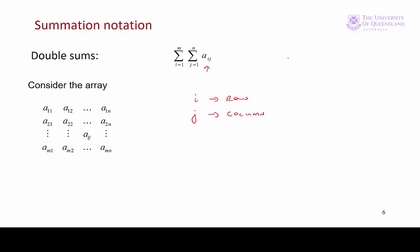So if we have i, j is equal to 2, 1, for example. That would be row 2, column 1. A, 2, 1. Do we have an array there?